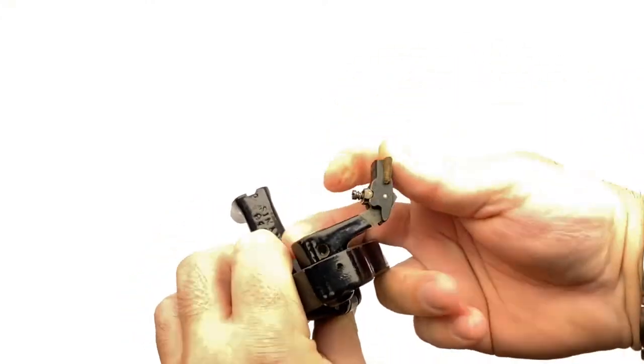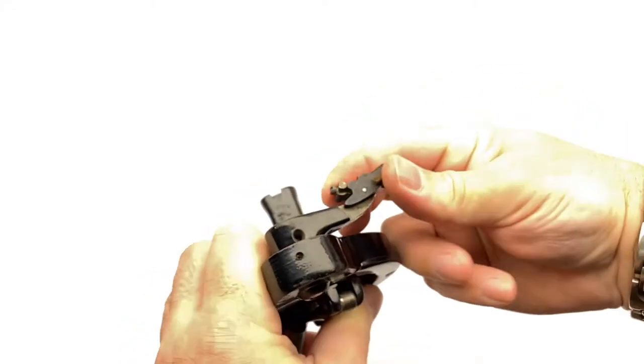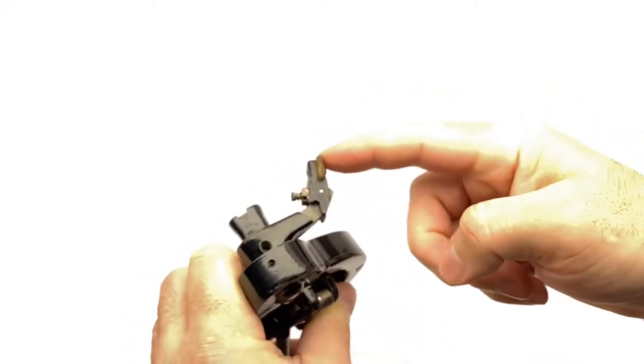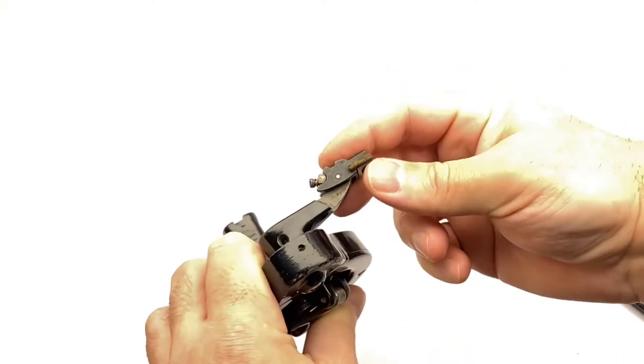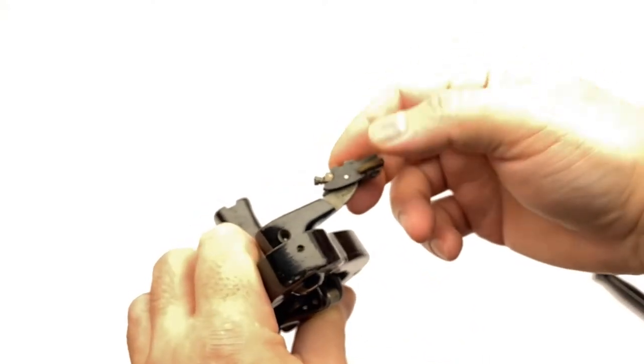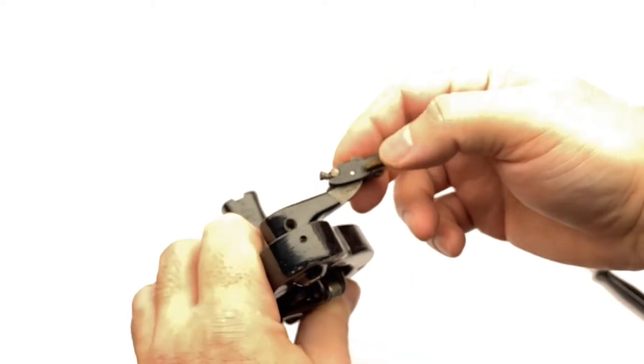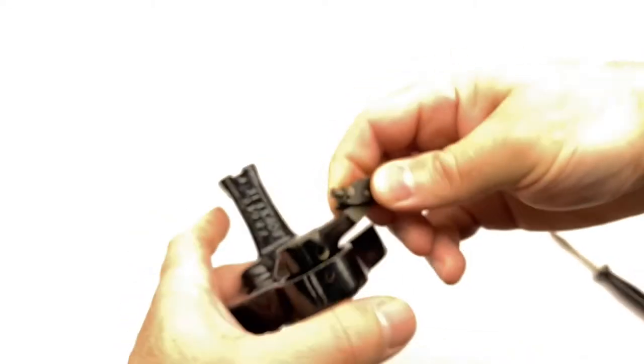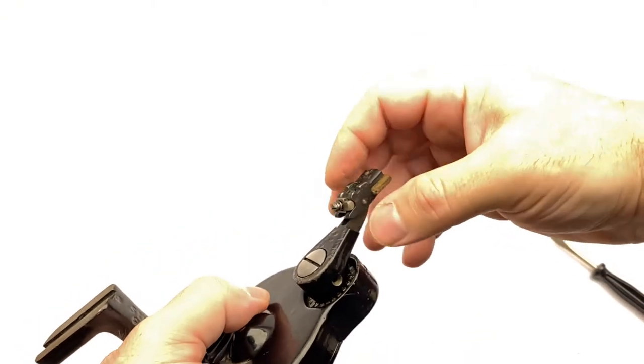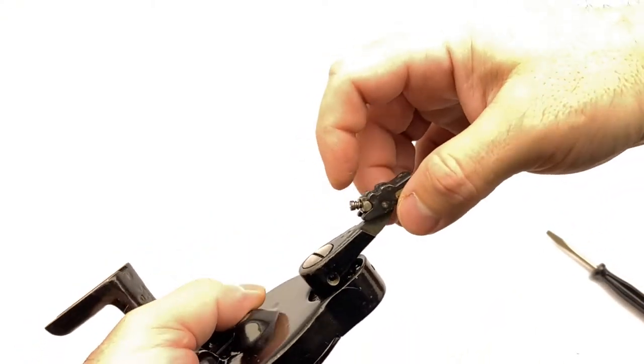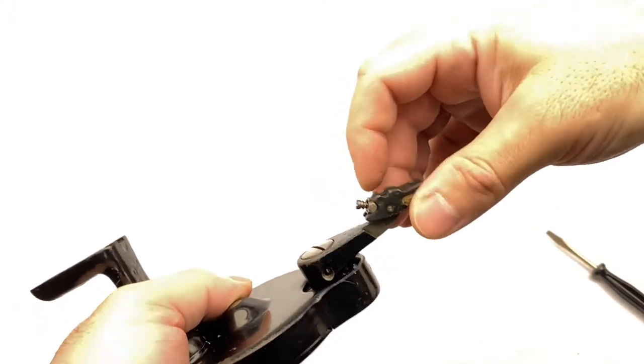There is a spring-loaded joint here. There's an assembly with a screw and a piece of metal. This allows the finger to lock in two places: the engaged position and the disengaged position.